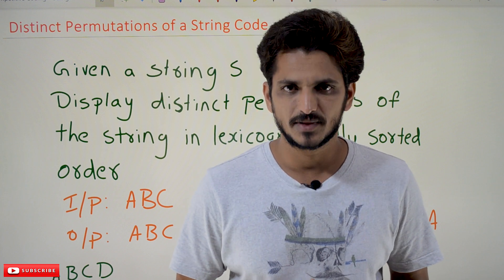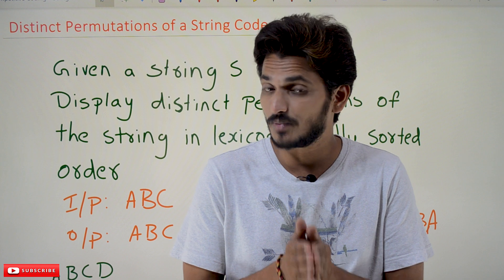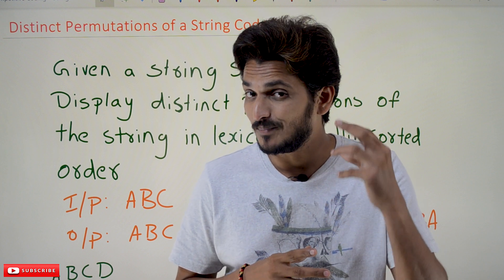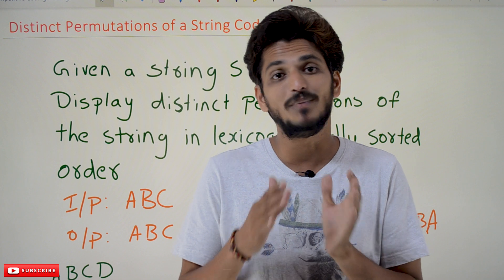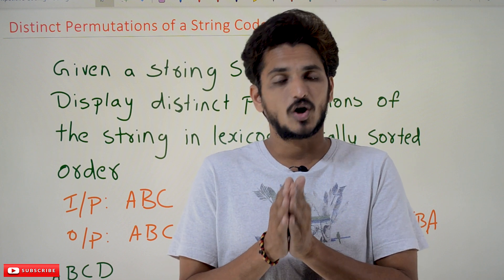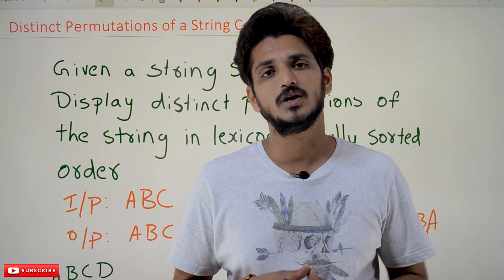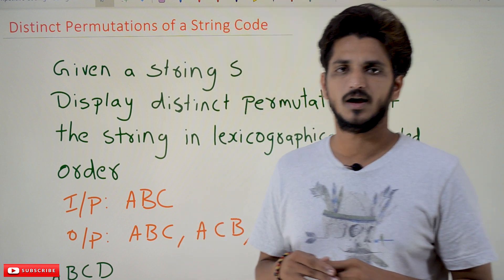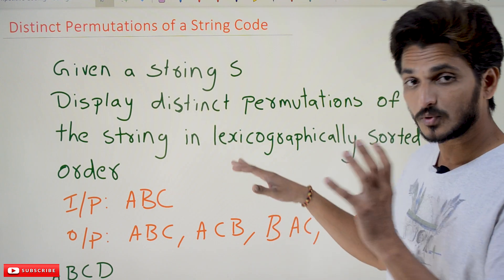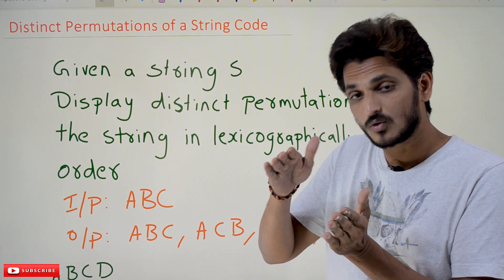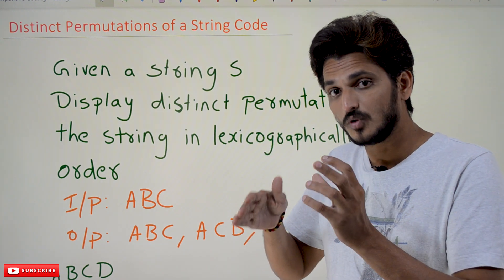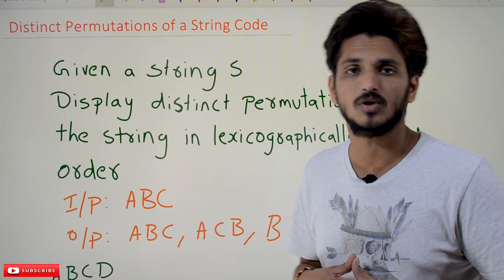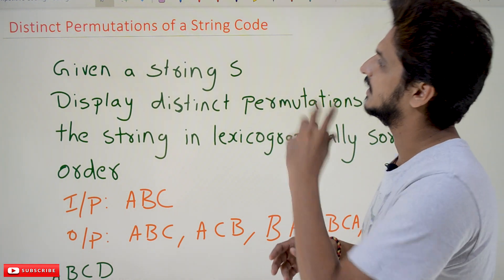Hi, welcome to Learning Monkey. I am Raghu here. In this class we will discuss about distinct permutations of a string. This is very important to understand and our explanation is completely based on the assumption that you already have some basic understanding of coding. If you are not good at basic coding level, please watch our website learningmonkey.in. We are going to provide you the graphical understanding of the coding part, which will help you understand the coding better — not only in this example, but also in other examples. So you have to focus in this video.